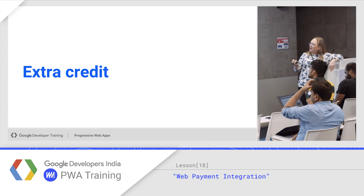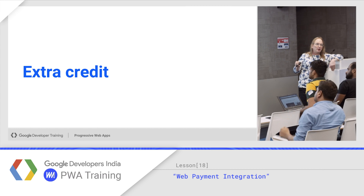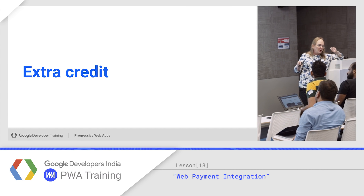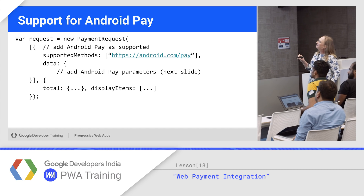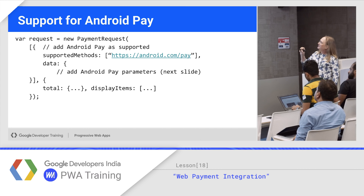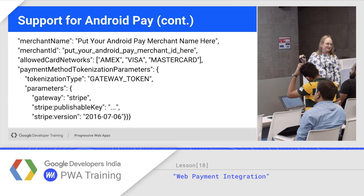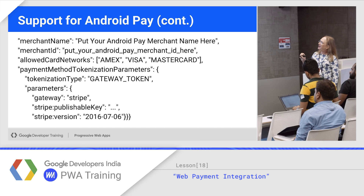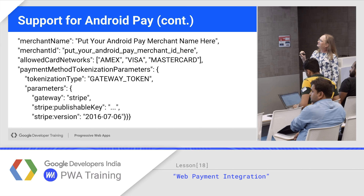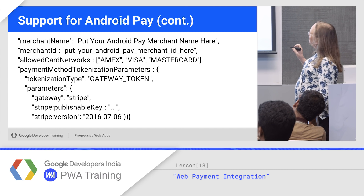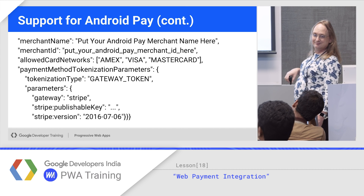There are a bunch of resources, and there's no single lab to go with this, but the e-commerce demo has four labs in your book that go with it. For Android Pay, supported methods use android.com/pay — you just pass the URL in. There are some parameters you need to add, but this comes right from the documentation, which explains how to do it.